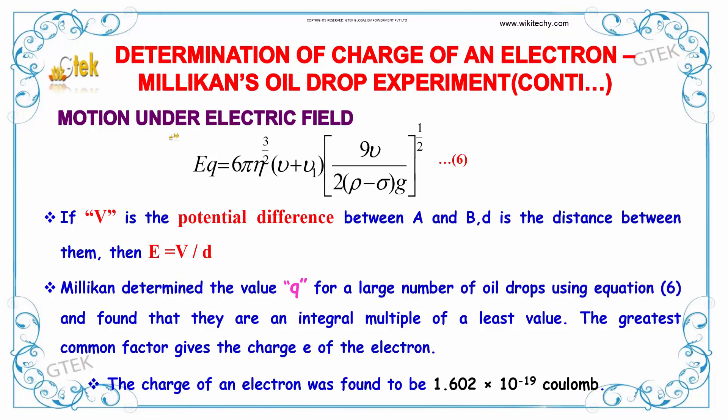This is the final equation of the electric field and force on the droplet. If V is the potential difference between A and B and d is the distance between them, E equals V divided by d.